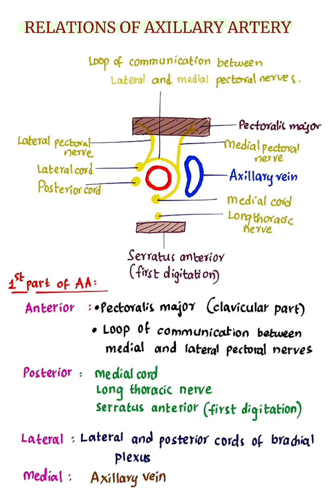Hi everyone. In this video we are going to see about relations of axillary artery. Axillary artery is divided into 3 parts by pectoralis minor. The first part is proximal to pectoralis minor, the second part lies deep to pectoralis minor, and the third part lies distal to pectoralis minor.